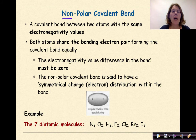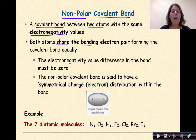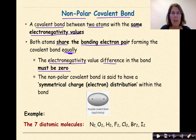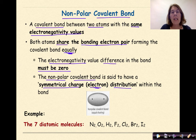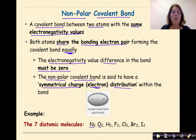A nonpolar covalent bond forms between two atoms with the same electronegativity values — both atoms share the bonding electron pair equally. The electronegativity difference must be zero. The nonpolar covalent bond has a symmetrical charge or electron distribution. In chemistry, the primary examples of nonpolar covalent bonds are the diatomic molecules: N₂, O₂, H₂, F₂, Cl₂, Br₂, and I₂ — all have nonpolar covalent bonds.